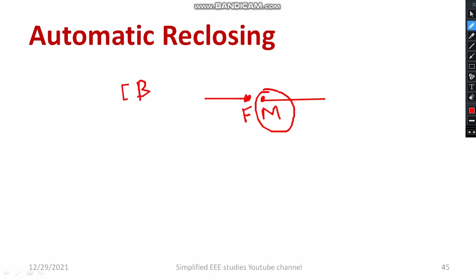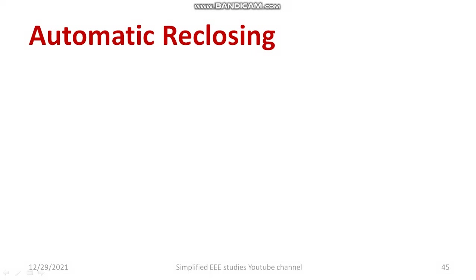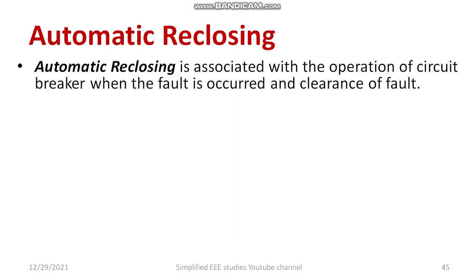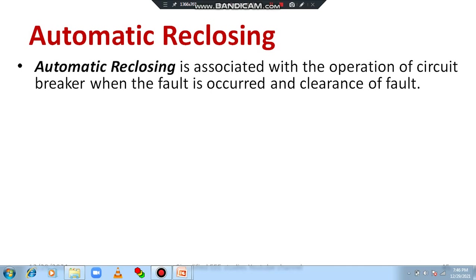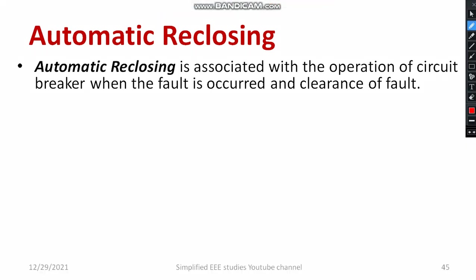During a fault, the circuit breaker contact becomes open. Once the fault is cleared, it returns to the normal state — that means the closed position. This is what exactly happens in case of a circuit breaker. Automatic re-closing is associated with the operation of the circuit breaker when a fault occurs and is cleared. It is 100% related to the operation of the circuit breaker.